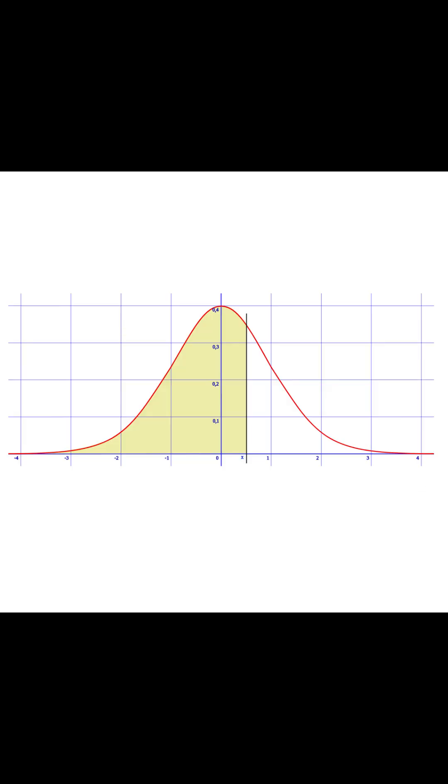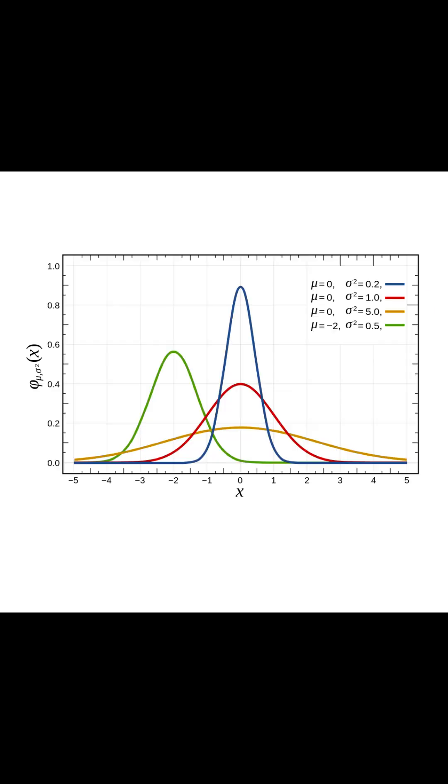Let's go over some of its properties. First, it's defined by two parameters: the mean, mu, which tells us the center of the distribution, and the standard deviation, sigma, which measures the spread.